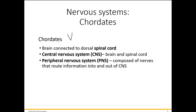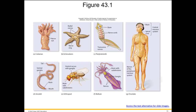Vertebrates have a backbone and a spinal cord. A key development in chordates is the spinal cord — other animals may have a brain but not all have a spinal cord. Vertebrates are known for having vertebrae that protect the spinal cord. They also have a developed central nervous system and peripheral nervous system, with nerves relaying information to the CNS. This represents the most advanced brain organization.